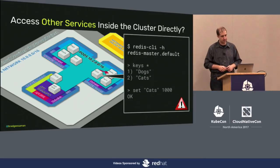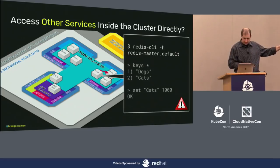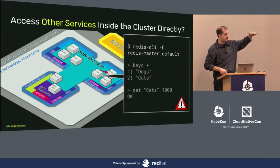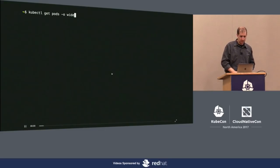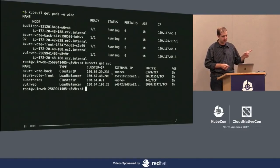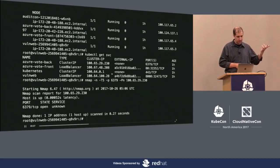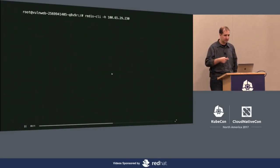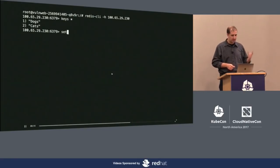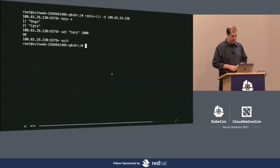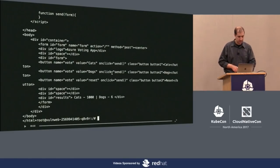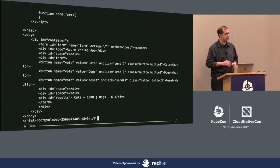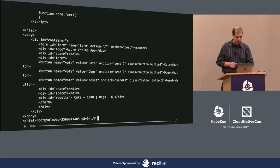What about tampering with other services inside the cluster? There's a vote and a Redis — the Azure Vote front and back application. It's a simple Python app with a Redis back end where you vote for cats or dogs. We get the azure-vote-back service, get its IP, port 6379 is open, install the Redis CLI, connect to it, dump the keys, and set cats to 1,000. Hit the web front page and cats shows 1,000 while dogs shows 6. Take that and extrapolate to any unauthenticated service inside the back end of your cluster.